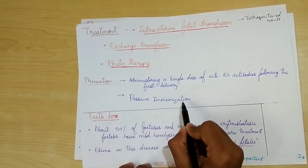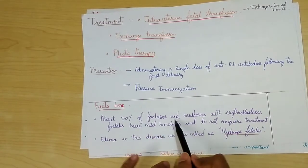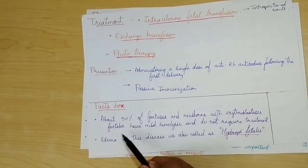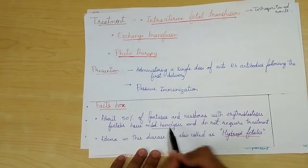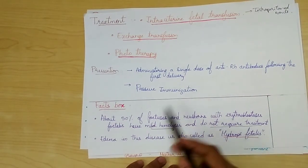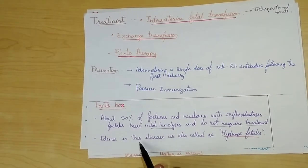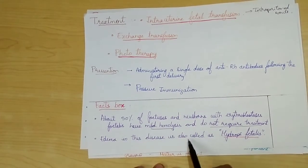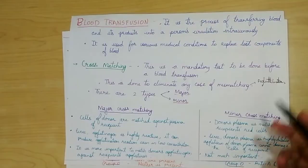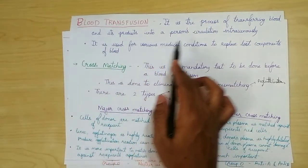Fact: about 50% of fetuses and newborns with erythroblastosis fetalis have mild hemolysis and do not require treatment, so only 50% of cases are severe and require treatment. Edema in this disease is also called hydrops fetalis.